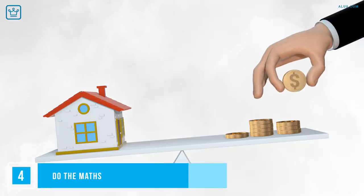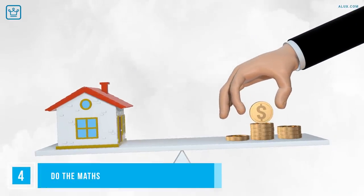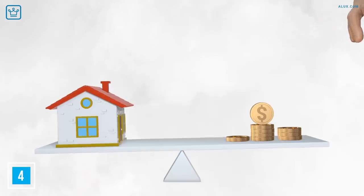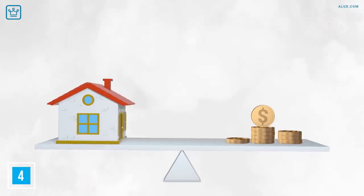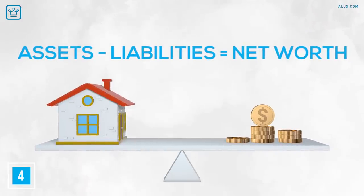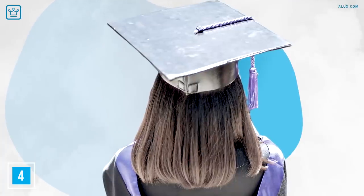Number 4. Do the math. Add up all of your assets and all of your liabilities, then subtract your liabilities from your assets. That's your net worth. Let's take a look at a couple of examples.